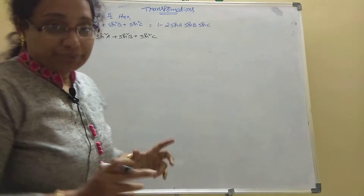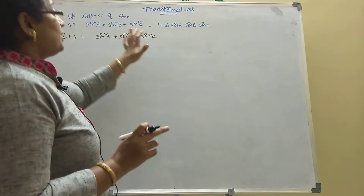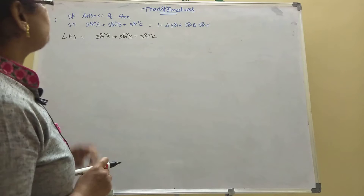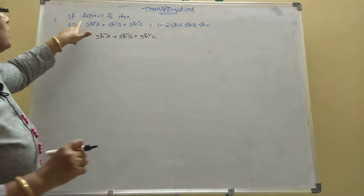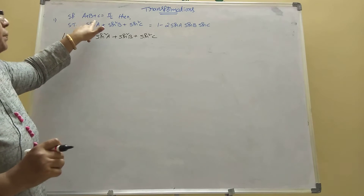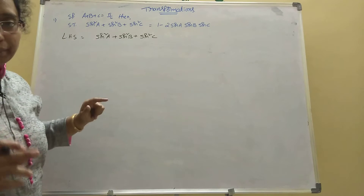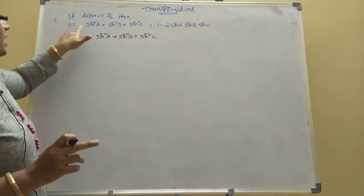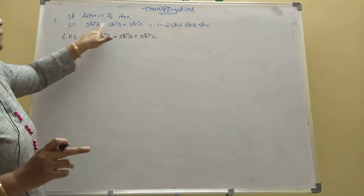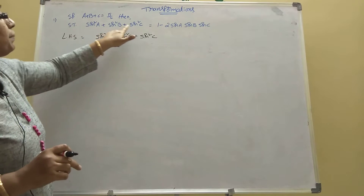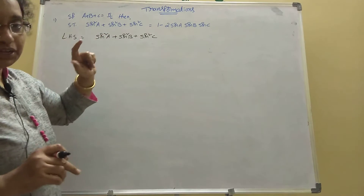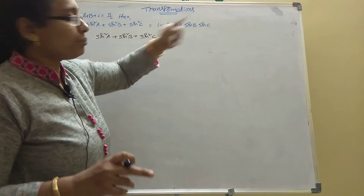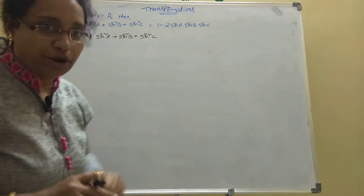Today I am discussing transfer machines first year trigonometry in 1A. Here, if A plus B plus C equal to pi by 2, then show that sin square A plus sin square B plus sin square C equal to 1 minus 2 sin A sin B sin C.